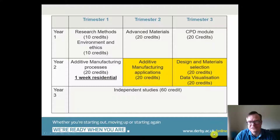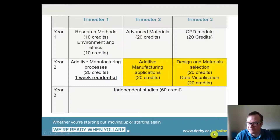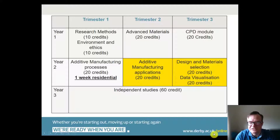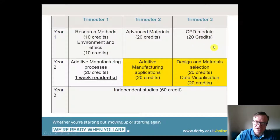You can enter in trimester one or trimester three. The research methods and environmental ethics modules run side by side — they're 10 credits each and are always the first modules you do. In trimester two we run Advanced Materials, which follows a Cambridge Engineering Selector approach to delivering materials content, so you'll be expected to use Cambridge Engineering Selector to identify optimal materials for different applications. In trimester three we run the CPD module, which is a compulsory module as part of all our MSc professional programmes, marking the end of year one.